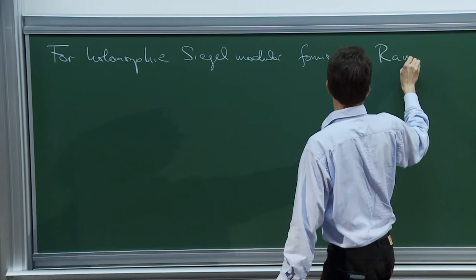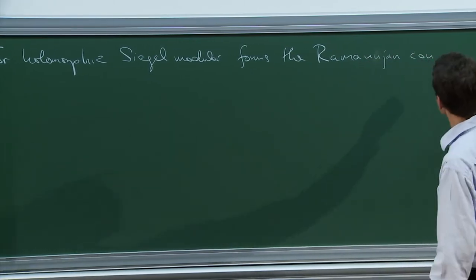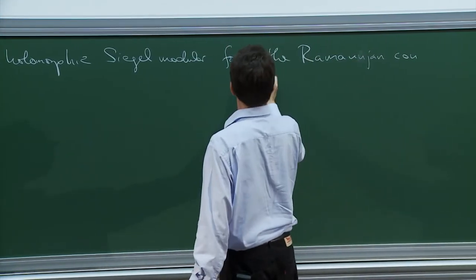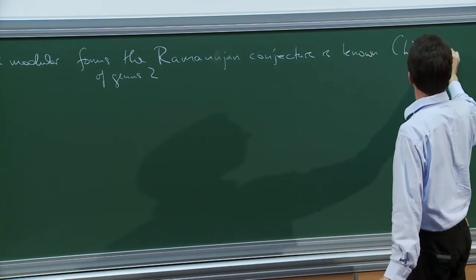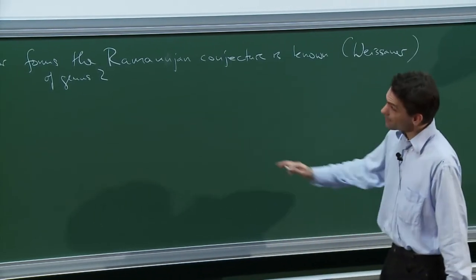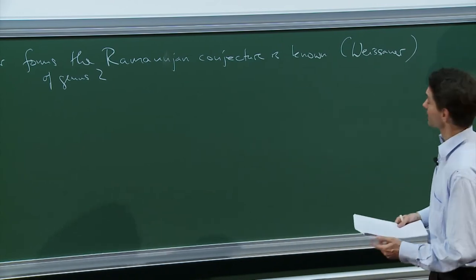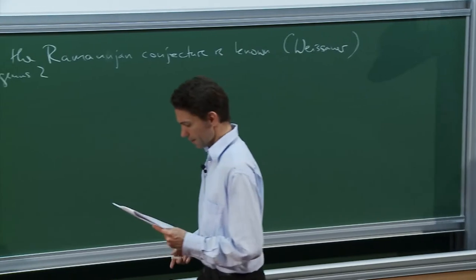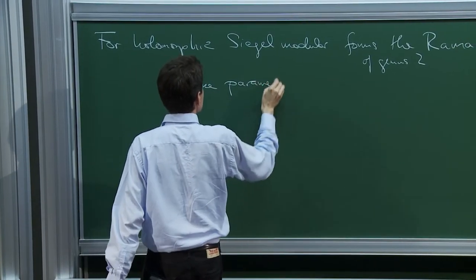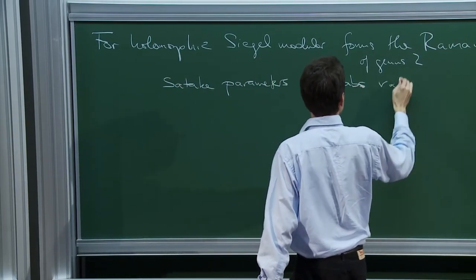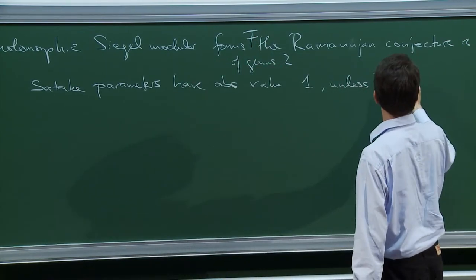The Ramanujan conjecture is known for genus two, just as in the case of genus one. This is work of Weissauer. But as I said, there is no really clear connection between the Satake parameters and the Fourier coefficients. The Satake parameters have absolute value one unless the form F is a lift.